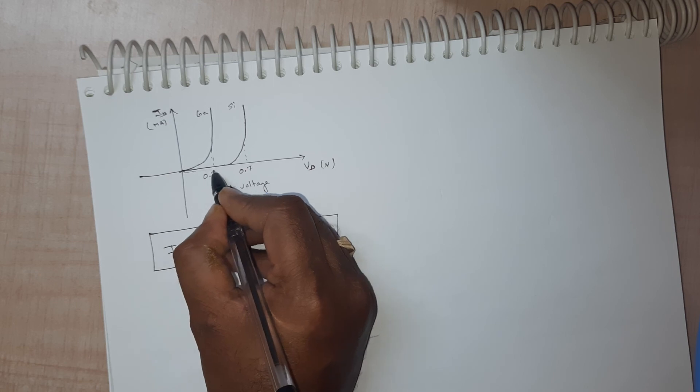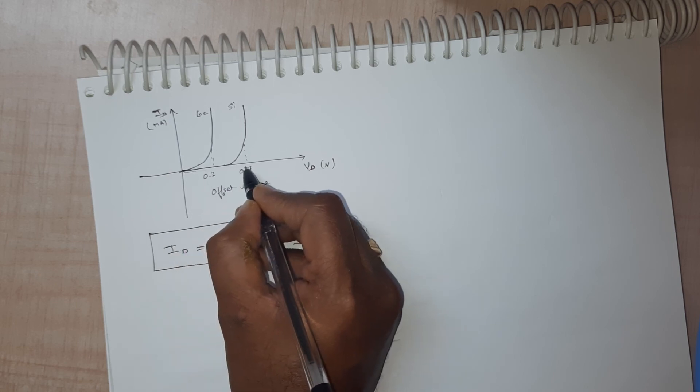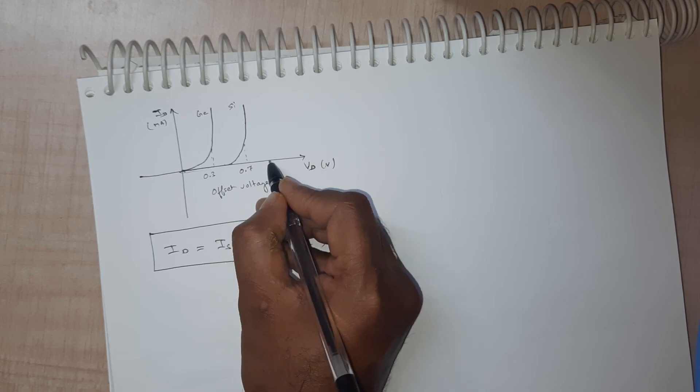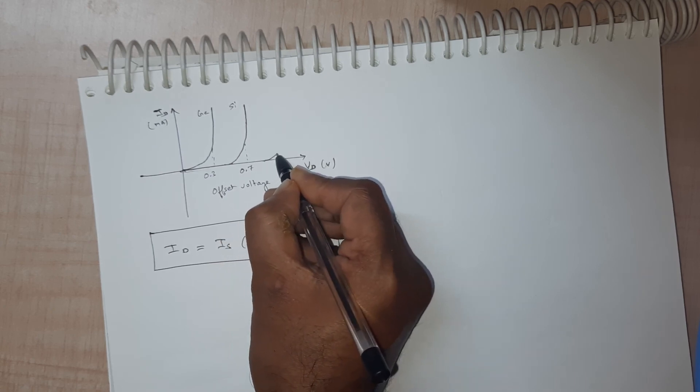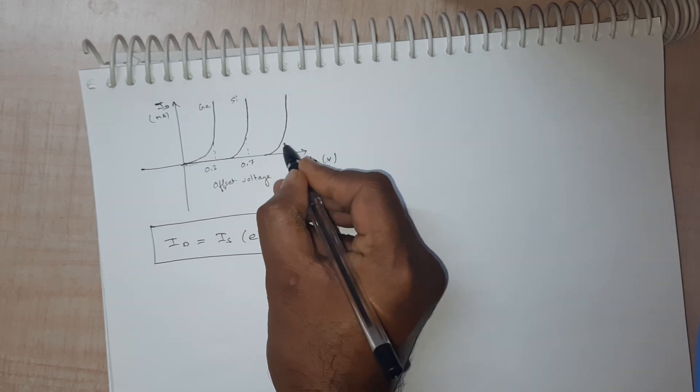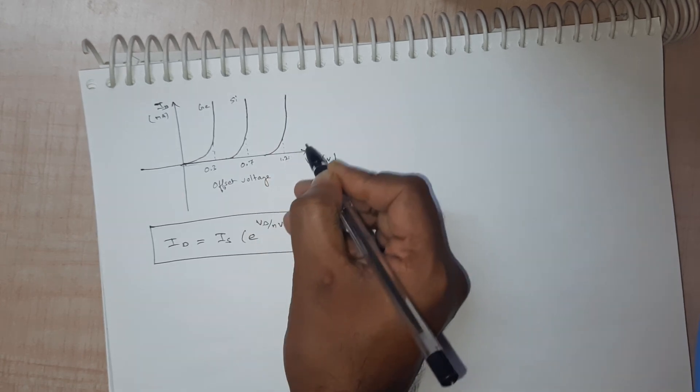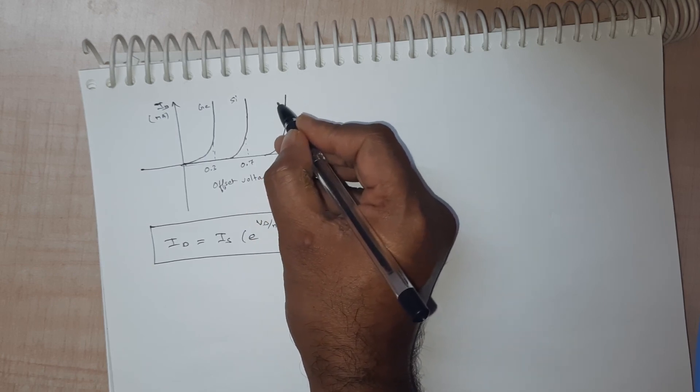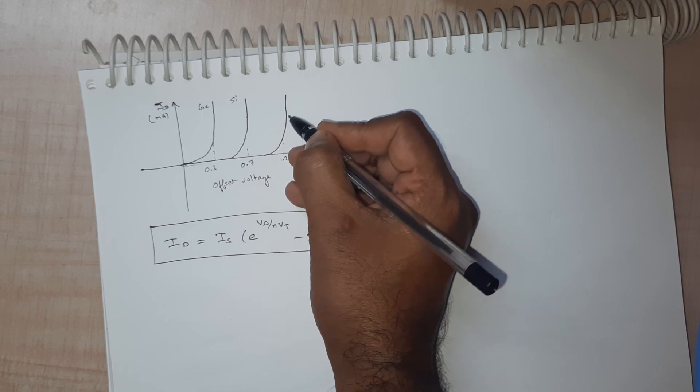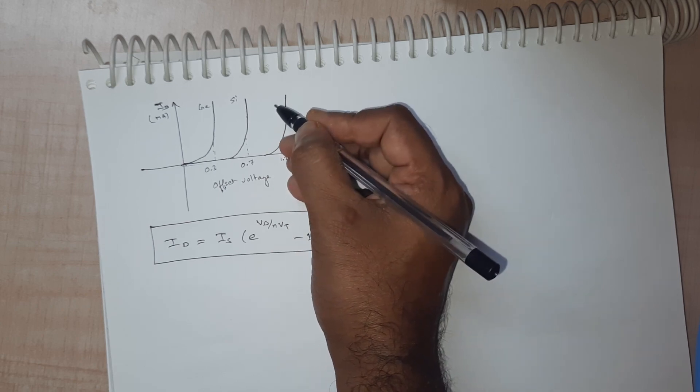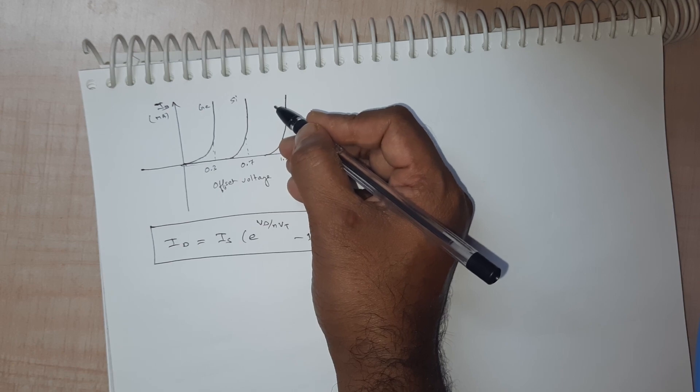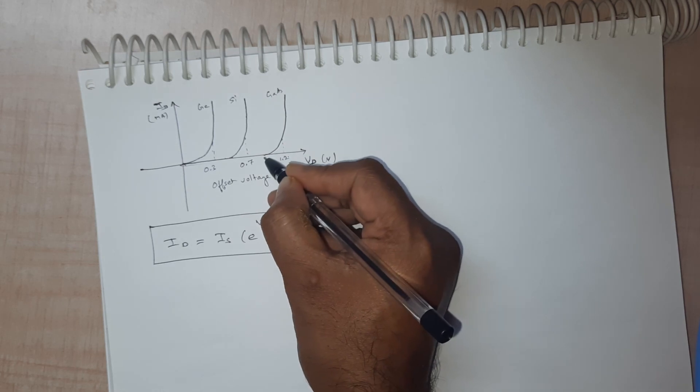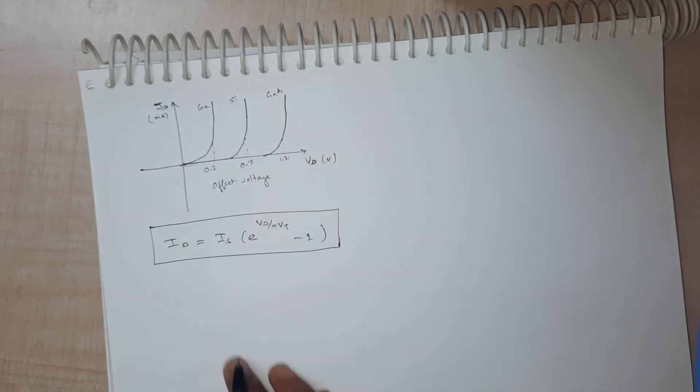And similarly even though you apply voltage from 0 to 0.3 to 0.7, the current does not increase for gallium arsenide semiconductor material. As soon as it reaches the offset voltage of 1.2 volts, your diode current increases. Hence you should be careful with respect to your application what should be your material of your diode while choosing a component. This particular VI characteristic is for gallium arsenide.